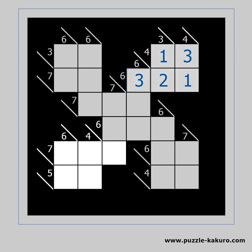Another approach for solving is to enter the possible candidates for each cell. The 7 in 3 cells horizontally can only be solved as 1, 2 and 4. We place the possible candidates in each cell. Now we check if those candidates work with the vertical clues. The 6 vertically can be solved as 1 and 5, as 2 and 4, or as 4 and 2.